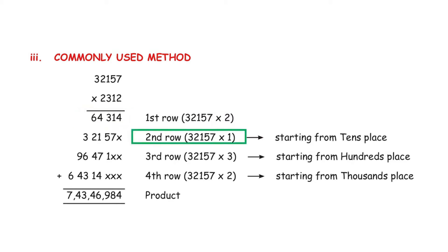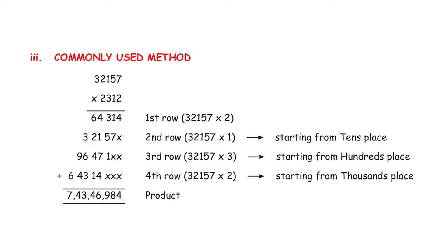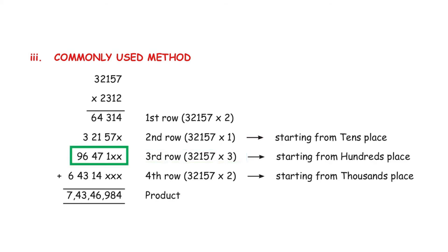For the second row, multiply 32,157 × 1, but write the answer starting from the tens place, so cross out the ones place. The answer is 32,157. For the third row, start from the hundreds place, crossing out the ones and tens. Multiply 32,157 × 3, giving 96,471.